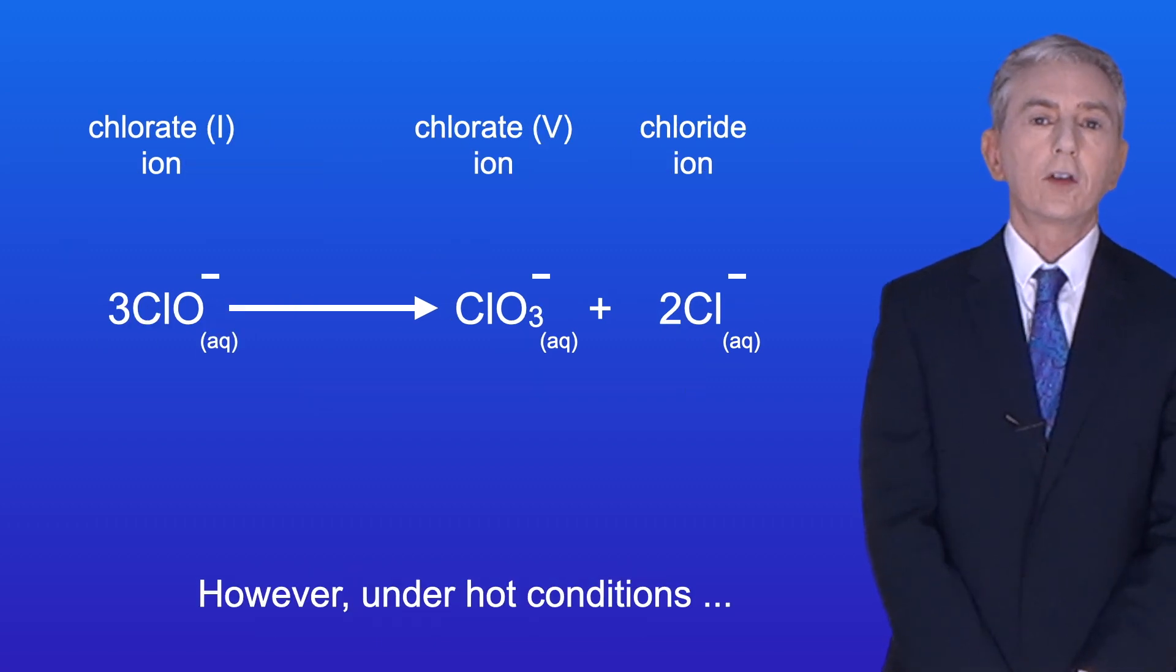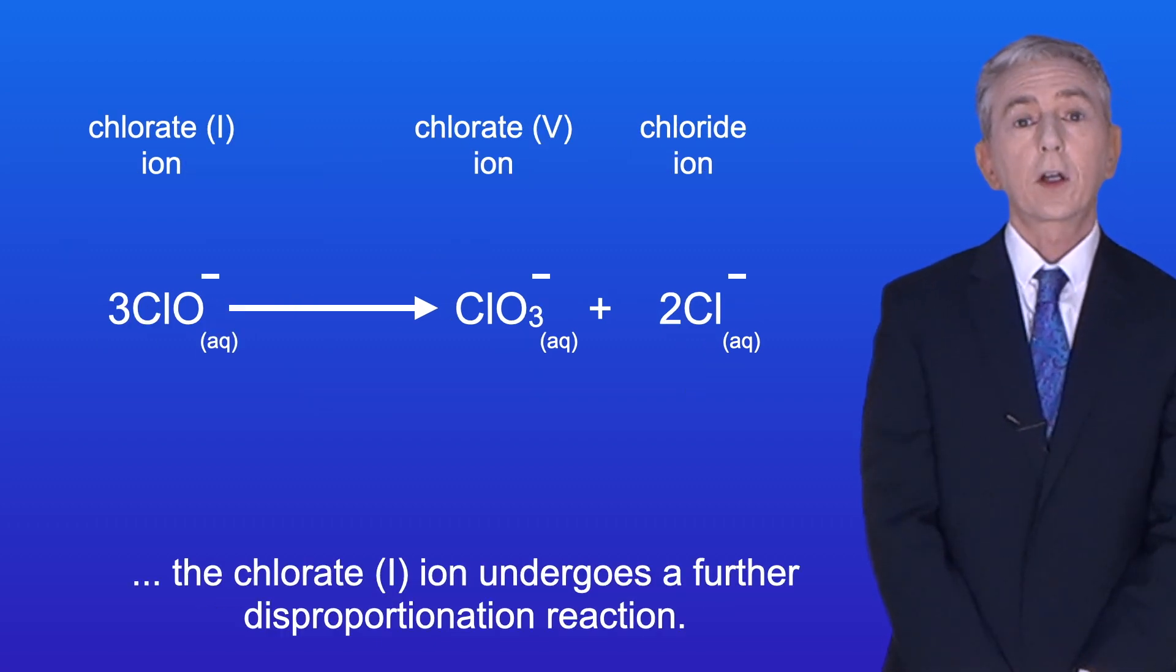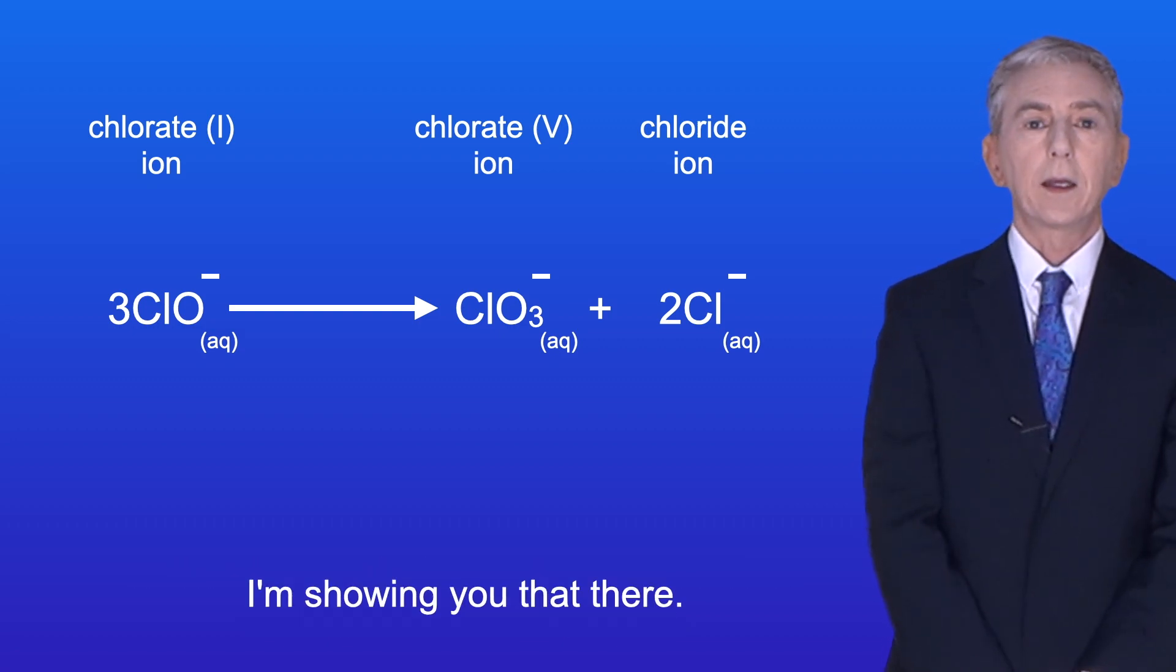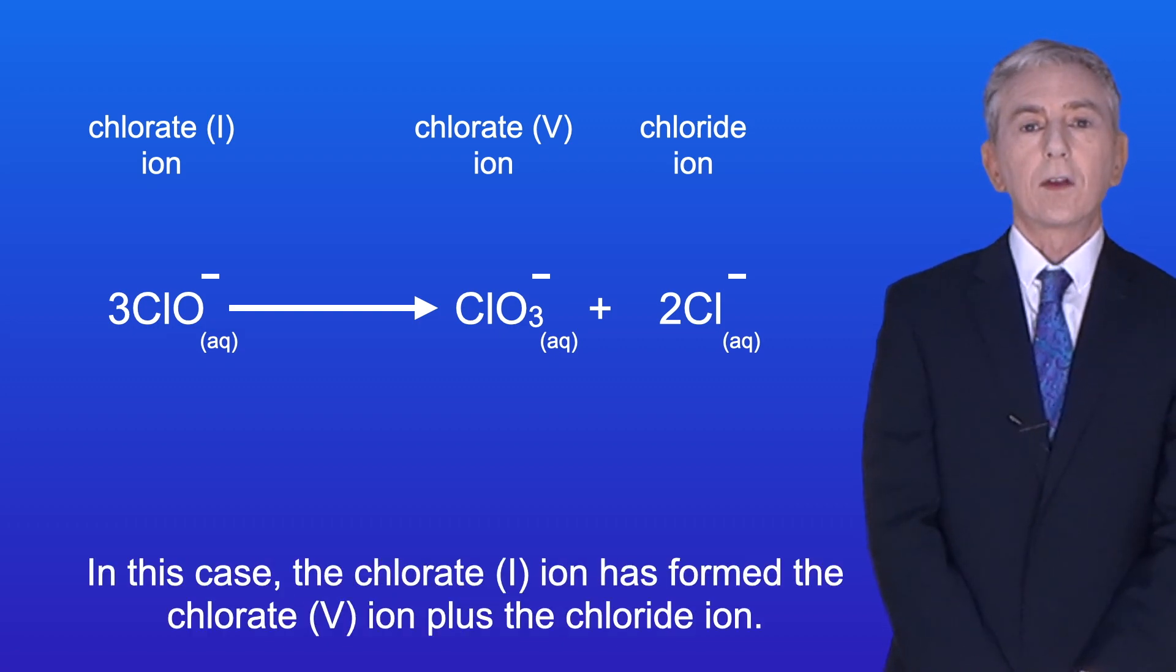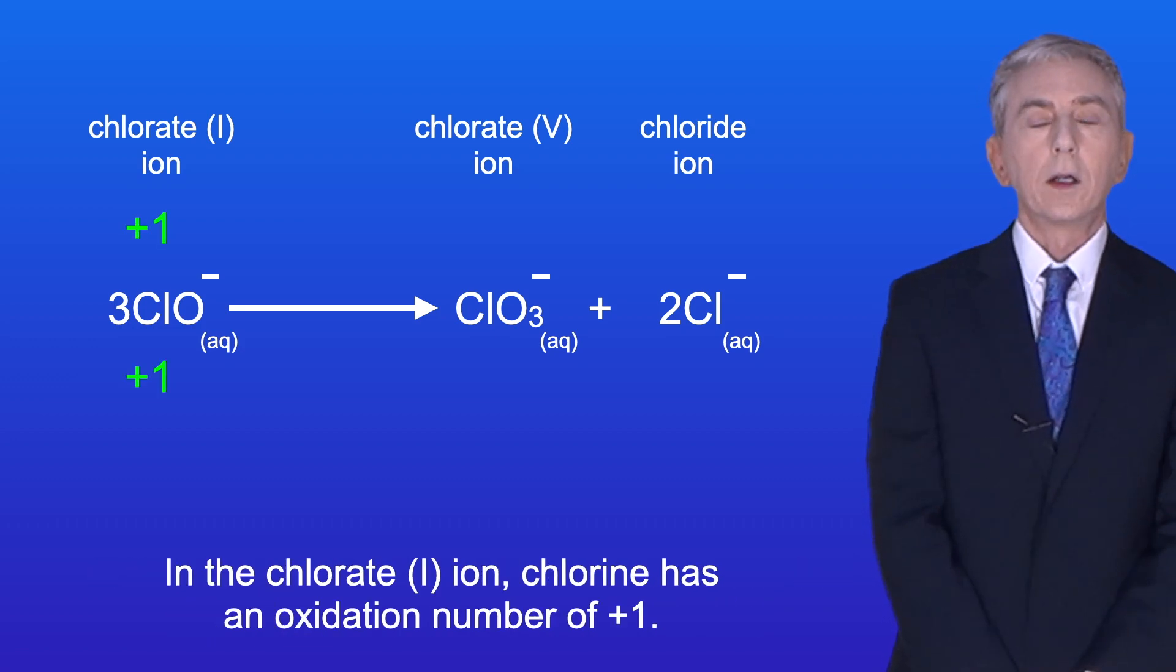However under hot conditions the chlorate one ion undergoes a further disproportionation reaction and I'm showing you that here. In this case the chlorate one ion has formed the chlorate five ion plus the chloride ion. In the chlorate one ion chlorine has an oxidation number of plus one.